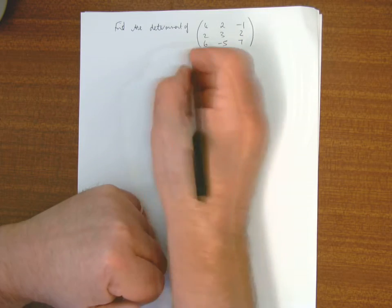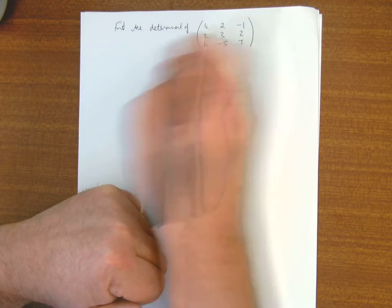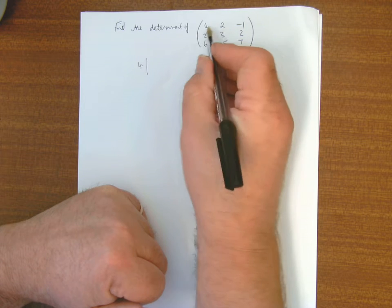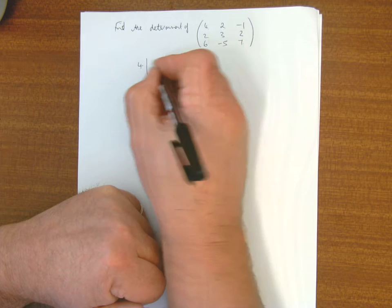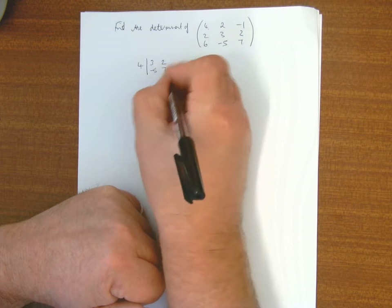So the second one, do the second one here. So I'll start with an entry of 4, so it's 4, block out that row, block out that column, I'm left with those 4 entries, 3, 2, minus 5, 7.